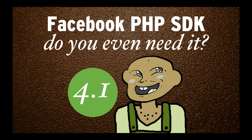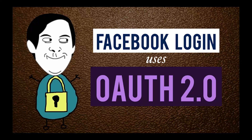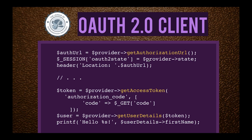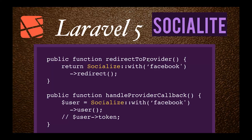So let's do a quick question: do we even need to use the PHP SDK? Well, Facebook login uses OAuth 2.0. So if you already have an OAuth 2.0 client like the PHP League — they have an OAuth 2.0 client and a provider that ties into Facebook, as well as the new Socialite plugin that comes equipped with Laravel 5 — if all you need to do is log a user in, grab an email address, and you're done, then you really don't need to use the PHP SDK.